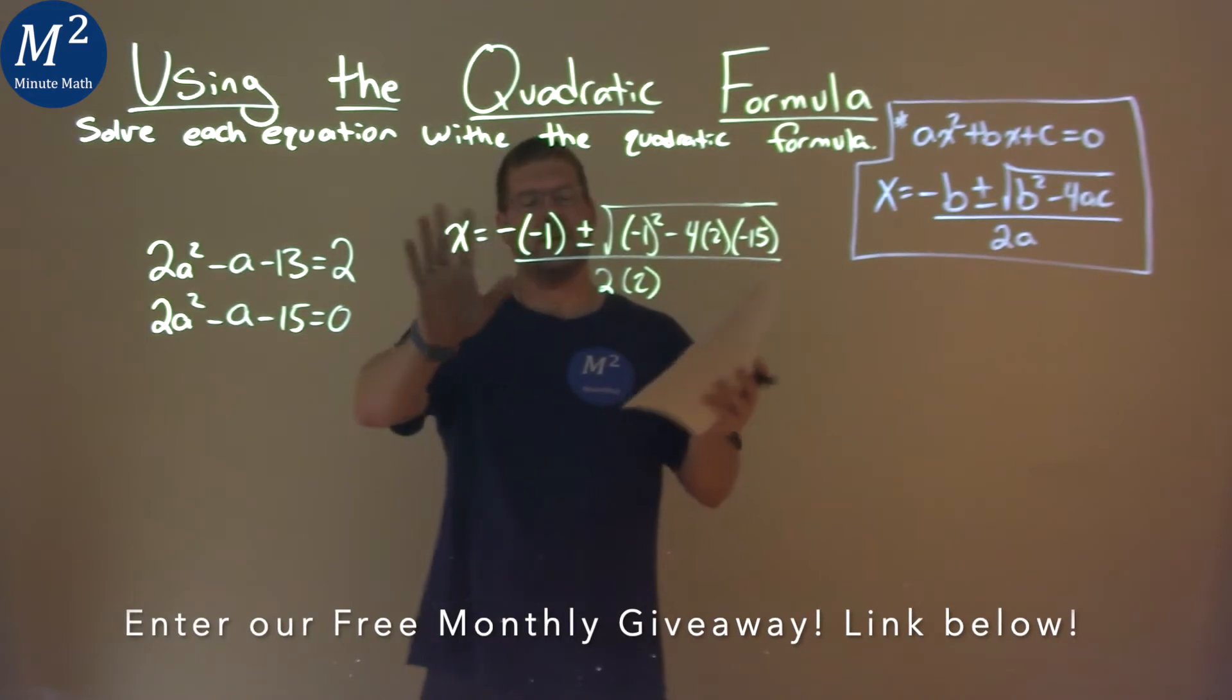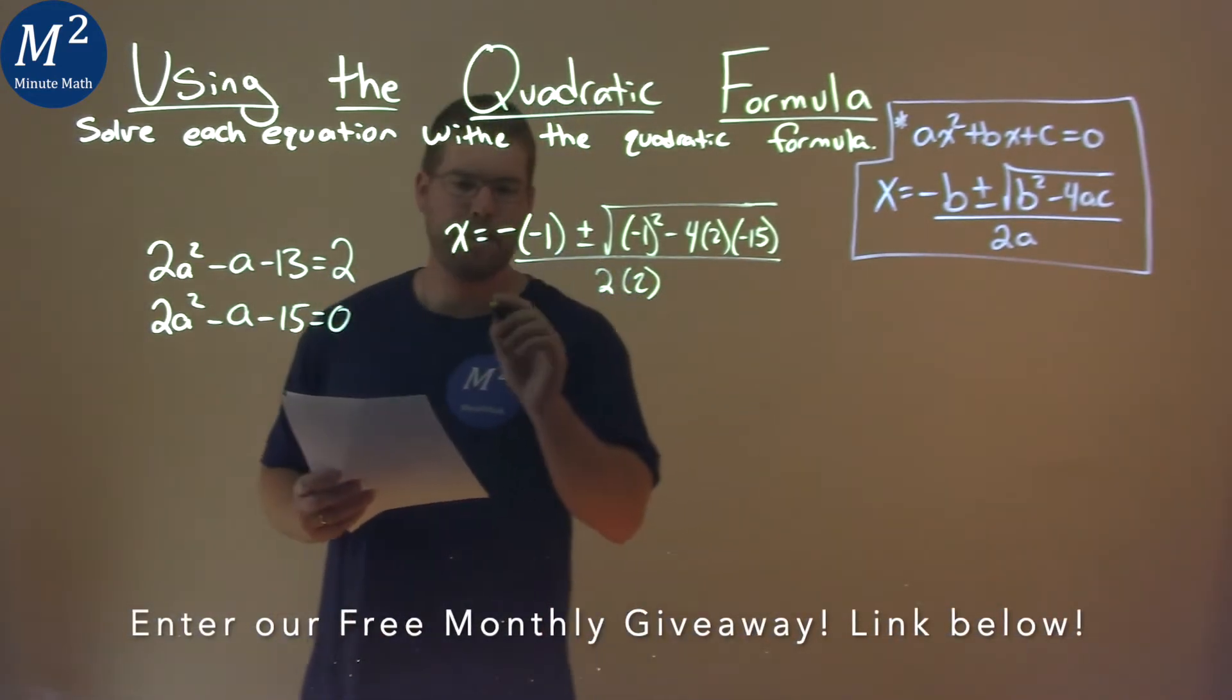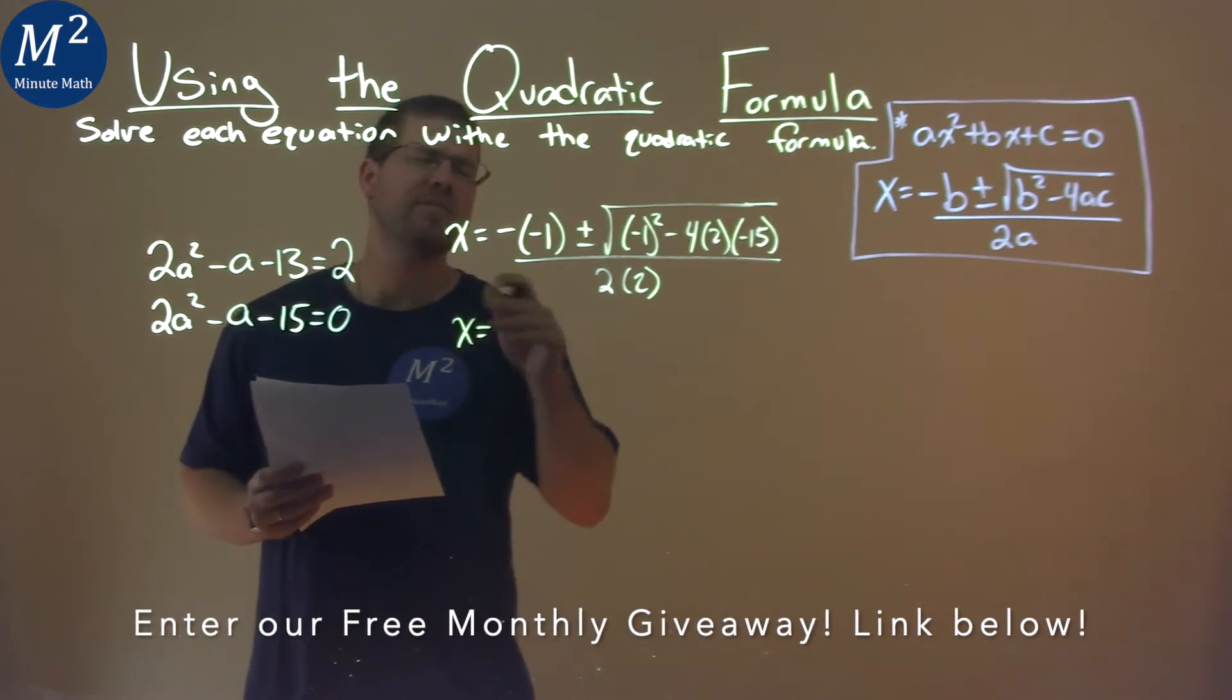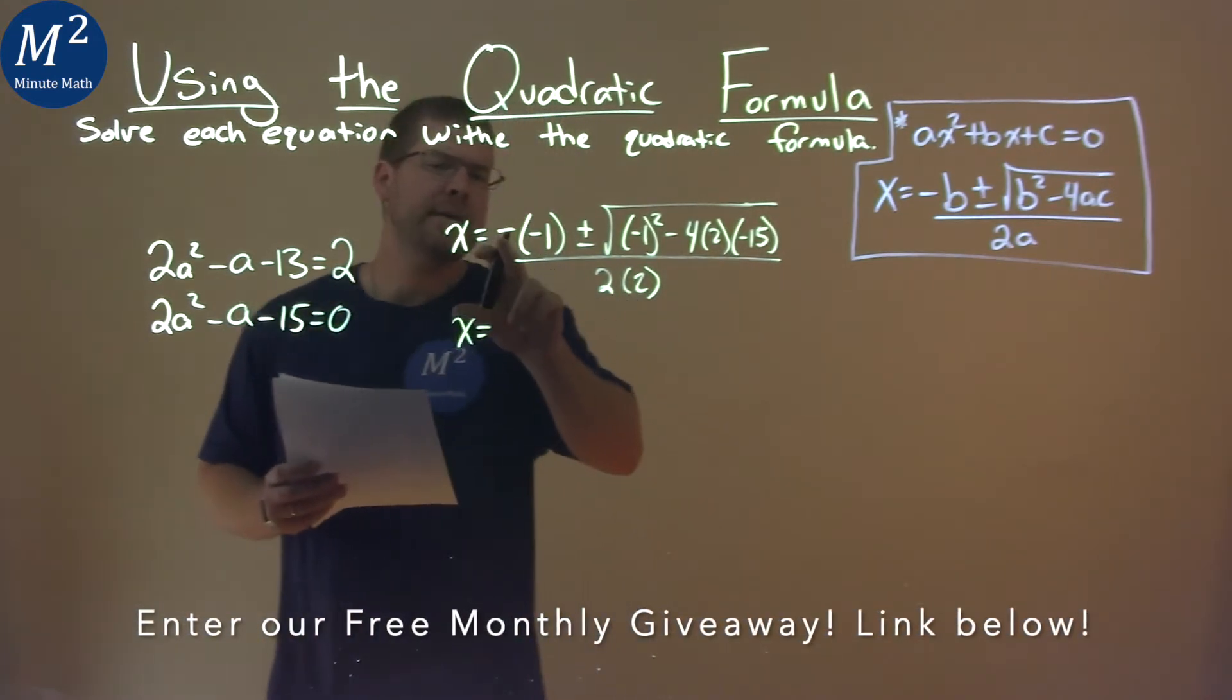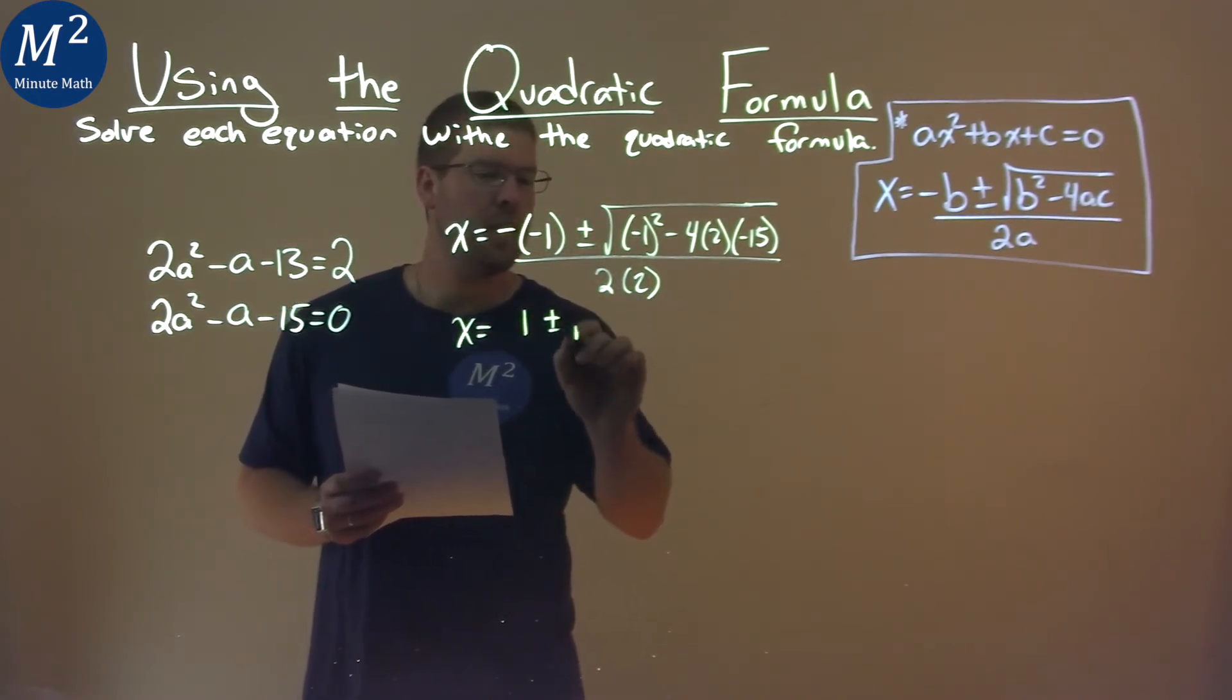Now we have it all set up. This is the hardest part—setting it up. Now we want to simplify the right-hand side. Negative times negative 1 is positive 1, plus or minus the square root. Negative 1 squared is positive 1.